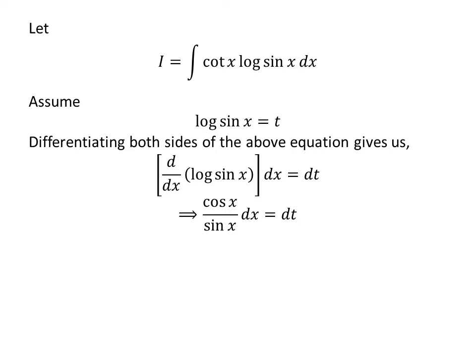So, cosine of x upon sin of x times differential of x is equal to differential of t.